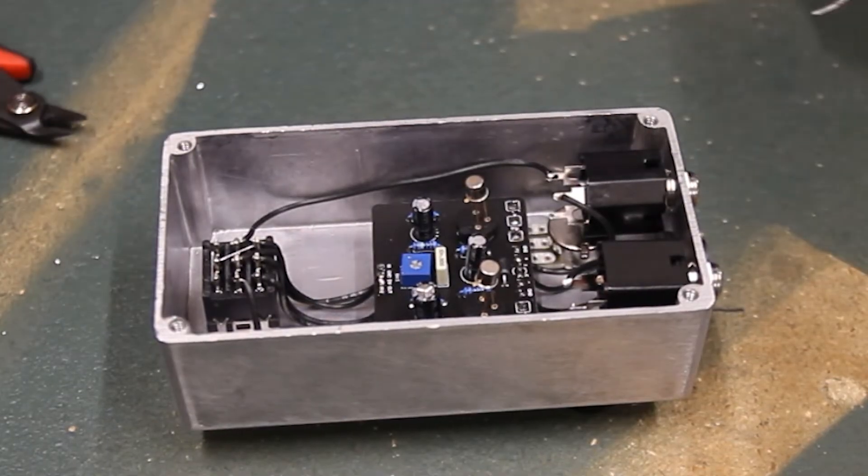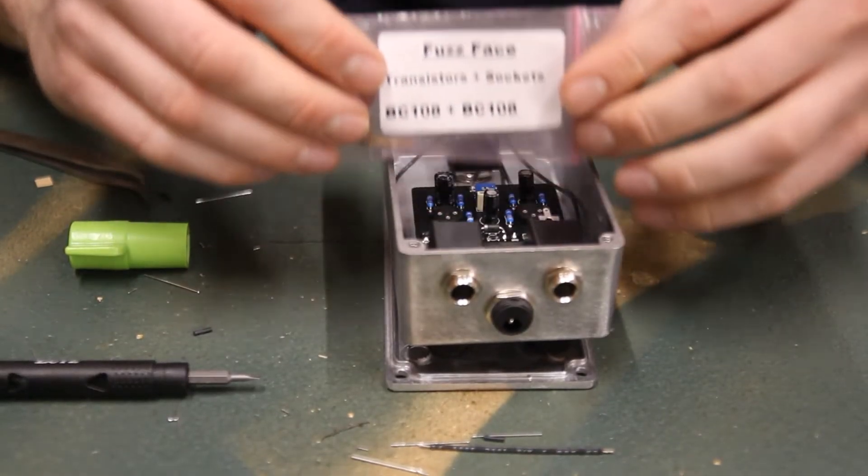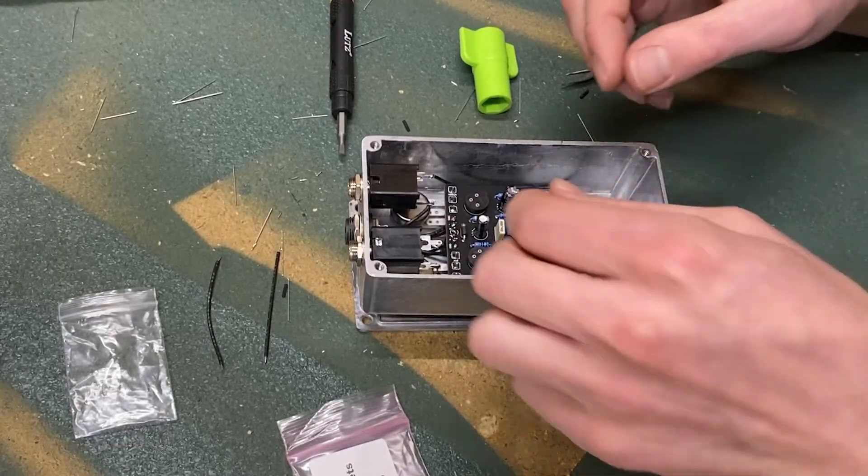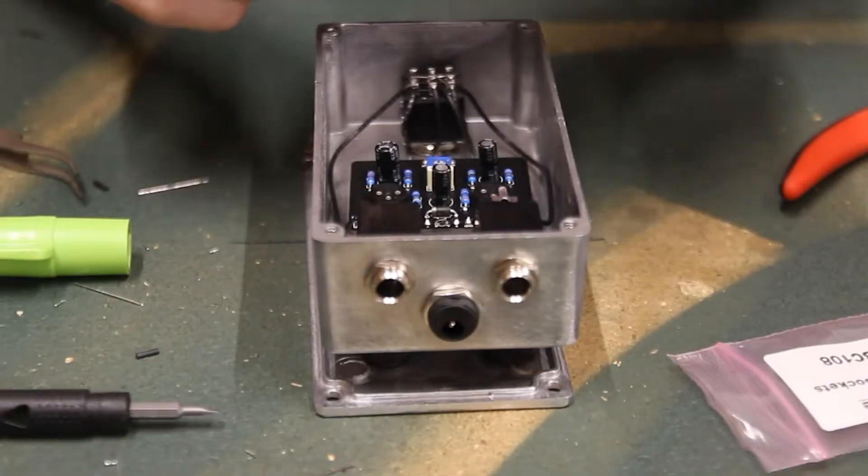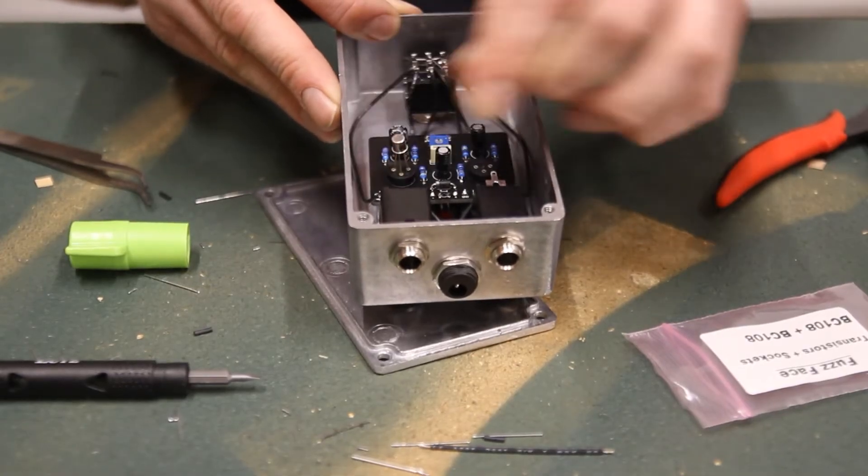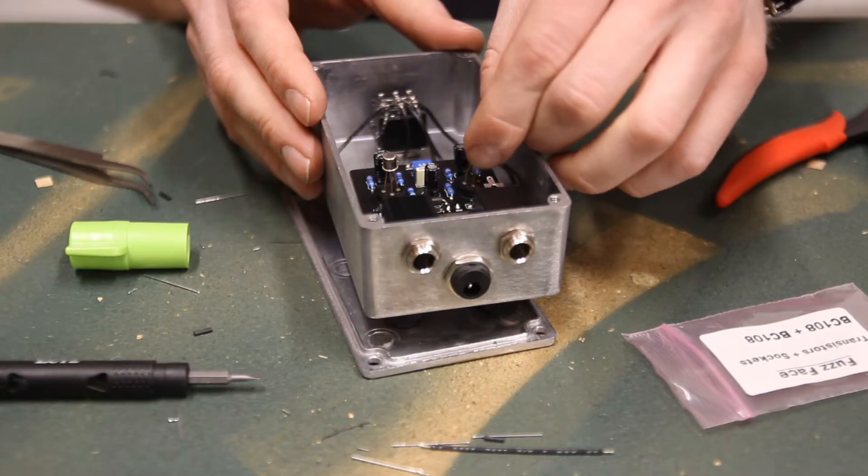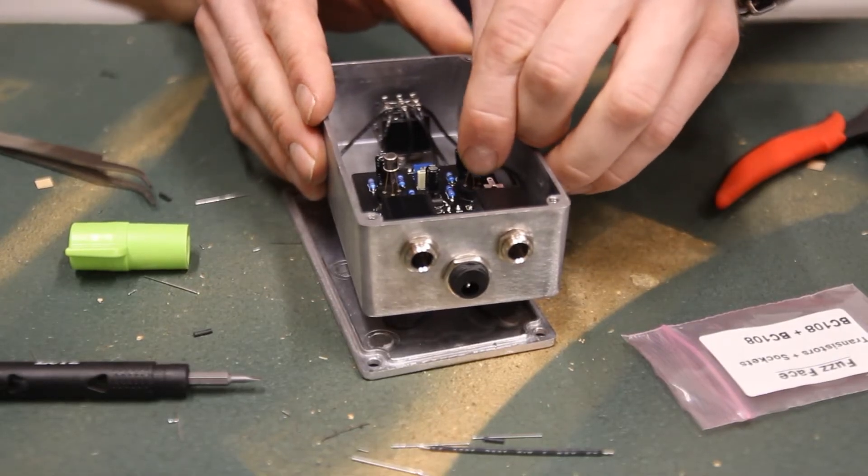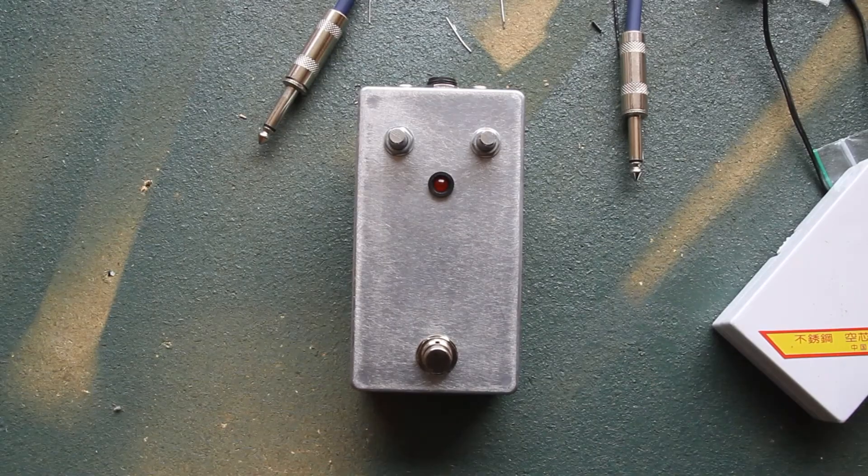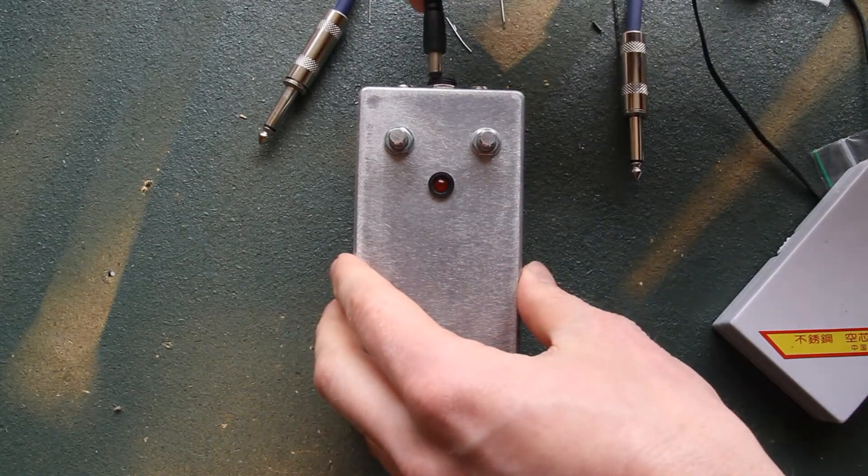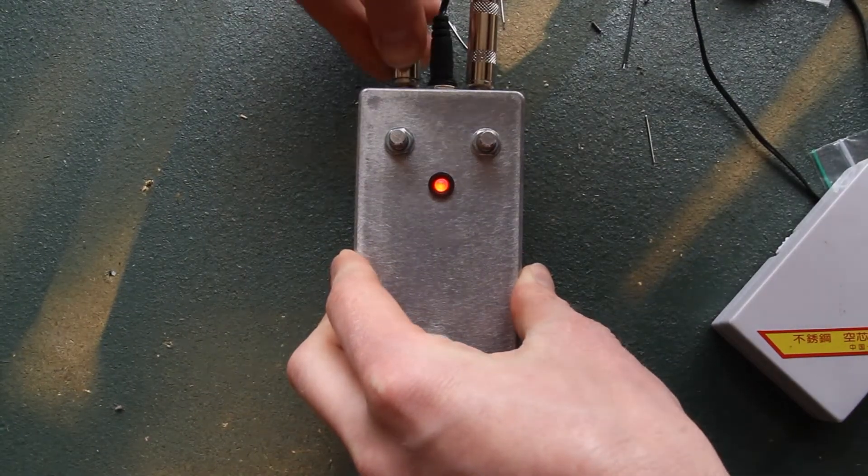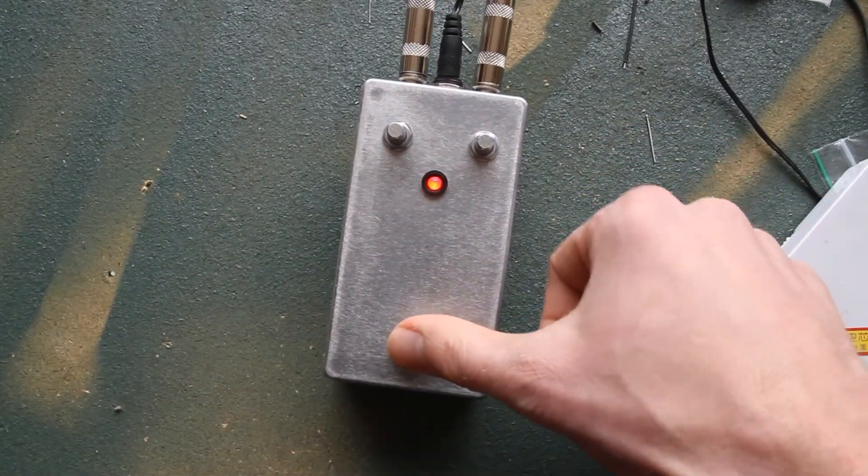You are done soldering. Find the two BC 108 transistors and bend the leads out a bit and orient into the socket so the pins line up and notch on the socket and transistor line up as well. Gently push the transistor into the socket until it holds. Do this for both transistors. You're almost done and now would be a great time to plug it in and test it out. Plug in power in your audio cables. If signal passes you successfully built a fuzz pedal. Nice job.